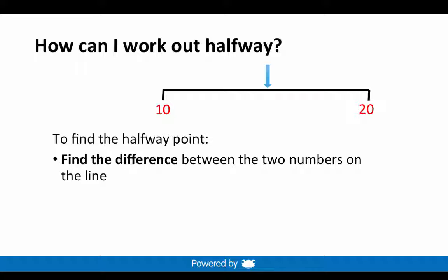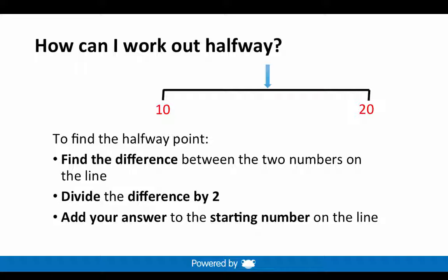In this example, 20 take away 10 equals 10. Divide the difference by 2. So 10 divided by 2 equals 5. Add the answer to the starting number on the line. 10 add 5 equals 15. I've worked out that the blue arrow is pointing at the number 15.